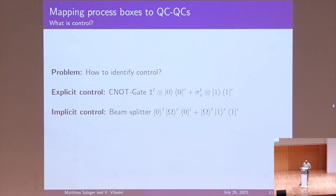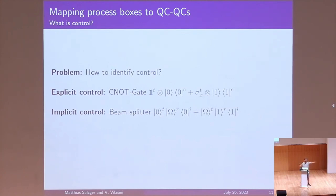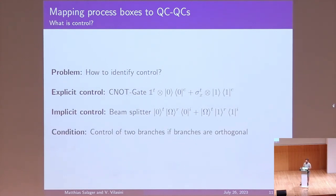Looking at both examples, you notice there is some orthogonality in both cases. The condition we came up with is that if you have two branches and the branches are orthogonal, then we say there is some kind of control going on between the branches. Another way to think of this: if you performed the process, you could do a measurement to figure out what happened. For the CNOT, you measure the control bit — if you get zero, you know the identity was applied; if one, the bit flip was applied. The same for the beam splitter: getting zero tells you the photon was transmitted, getting one tells you it was reflected.